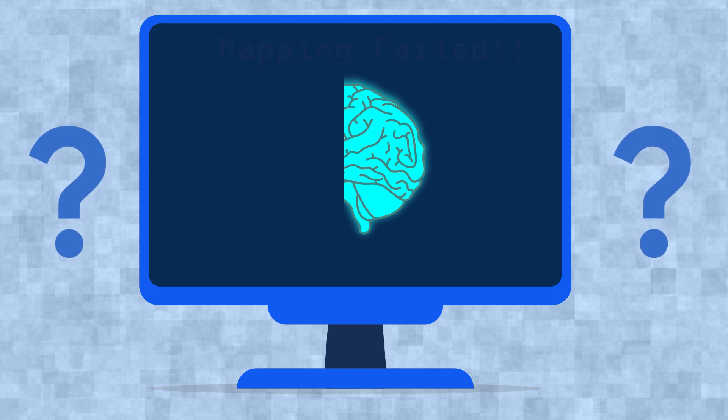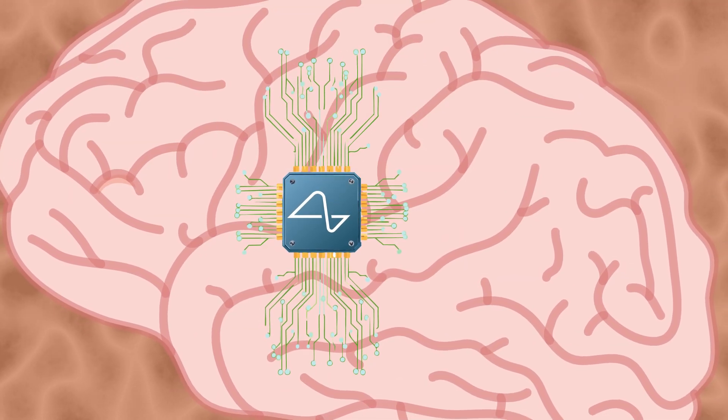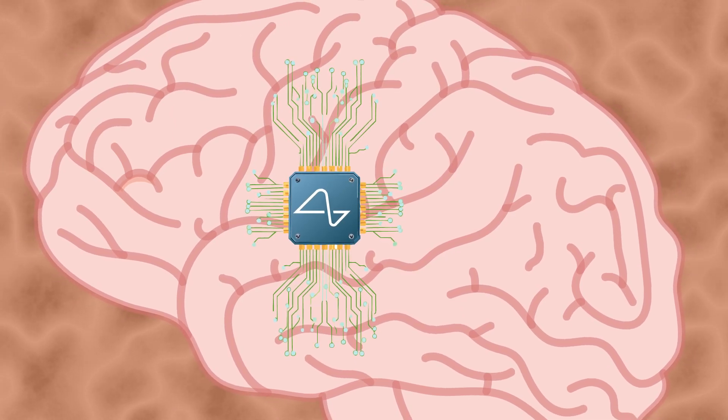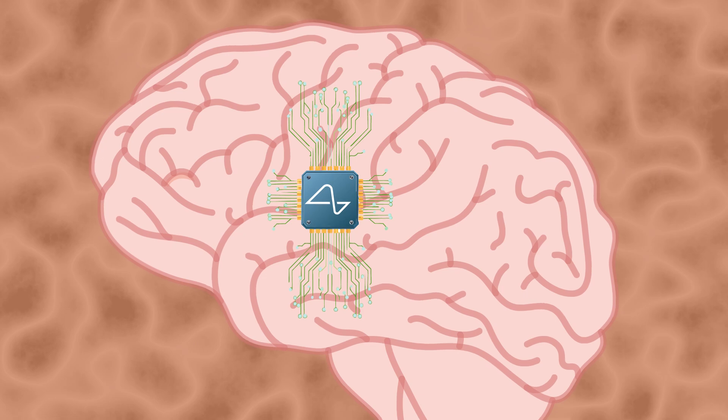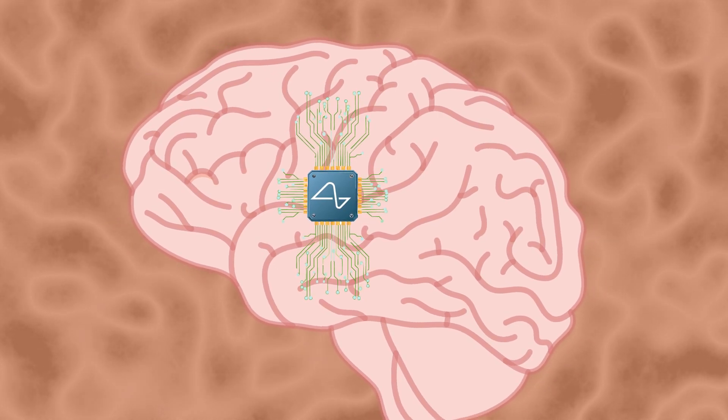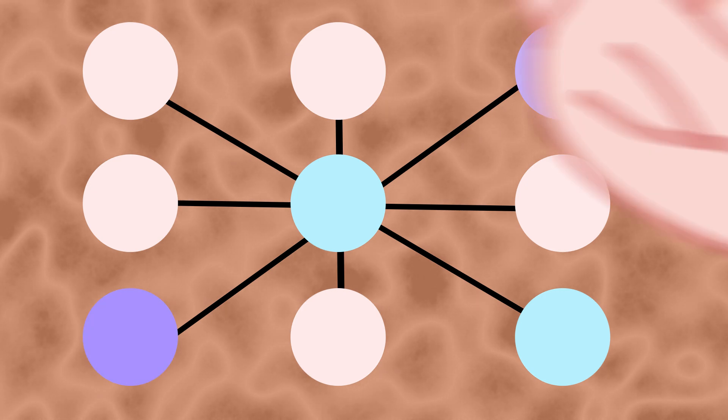We're getting closer each day thanks to advancements in both hardware, like Neuralink's electrodes, which have thousands of channels capable of recording vast amounts of brain activity with better detail than before, and software, such as improved machine learning algorithms that decode neural signals.